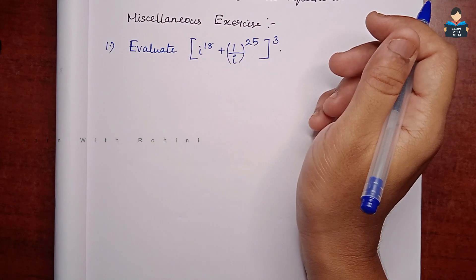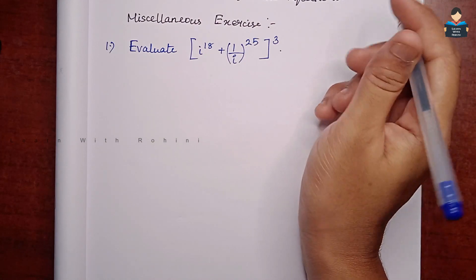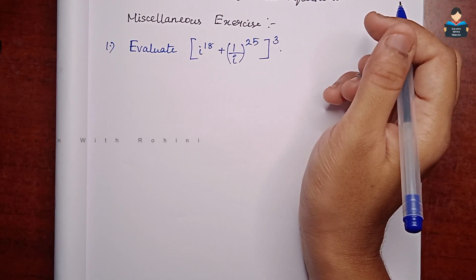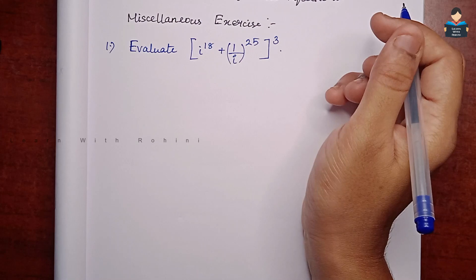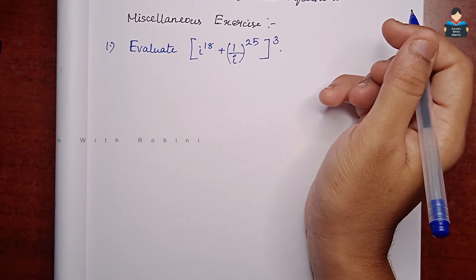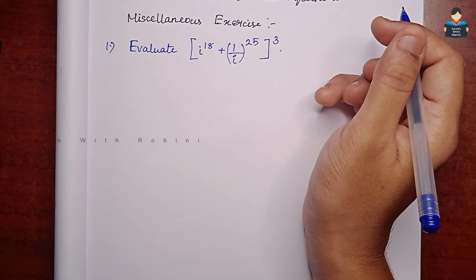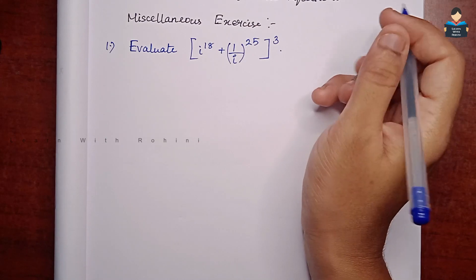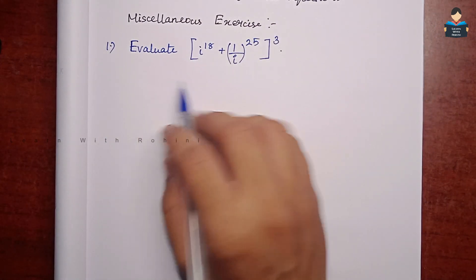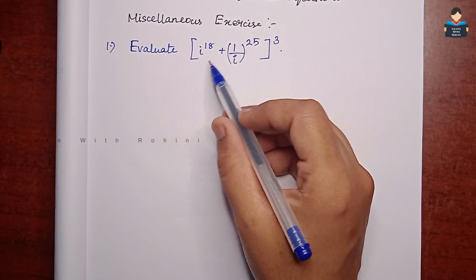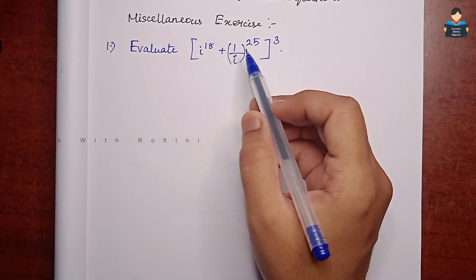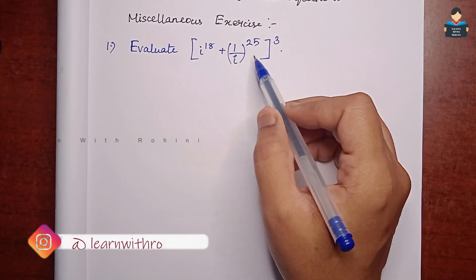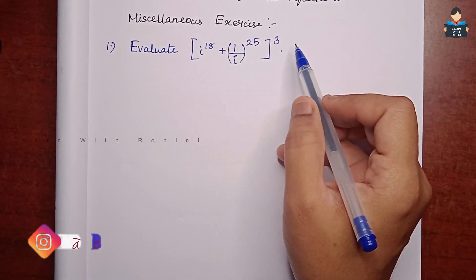Hello everyone, welcome to our channel. In this video, 11th standard NCERT Math Chapter 5, Complex Numbers and Quadratic Equations, Miscellaneous Exercise. First sum: evaluate (i to the power 18 plus 1 by i to the power 25) the whole cube.